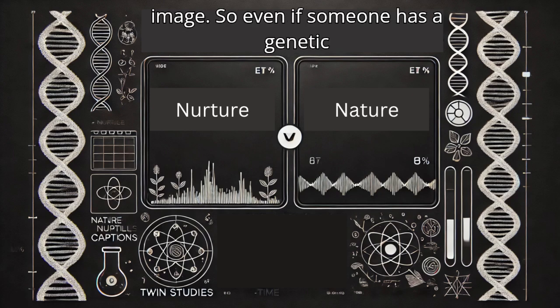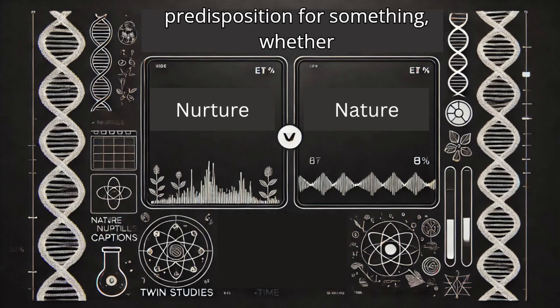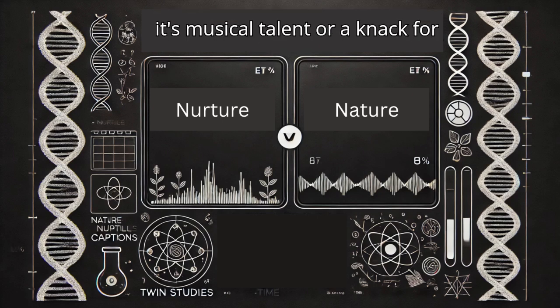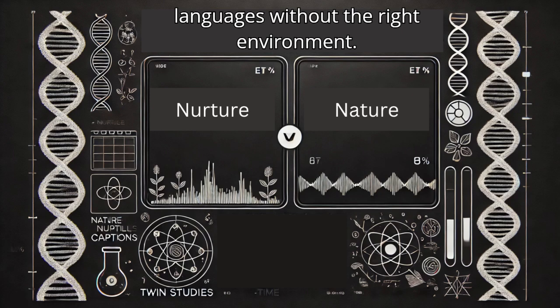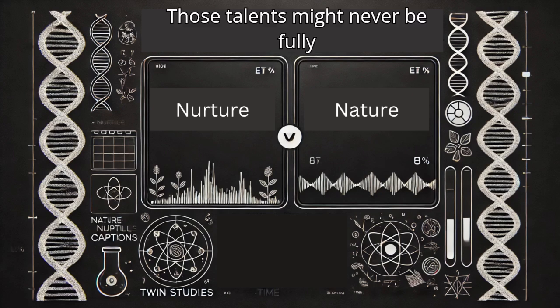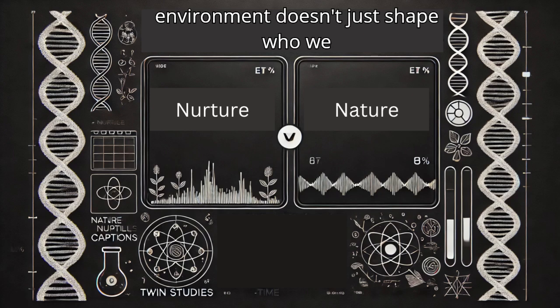That's a helpful image. So even if someone has a genetic predisposition for something, whether it's musical talent or a knack for languages, without the right environment, those talents might never be fully expressed. Precisely. It's this intricate dance between nature and nurture. And our environment doesn't just shape who we are, but it can actually influence how our genes express themselves.